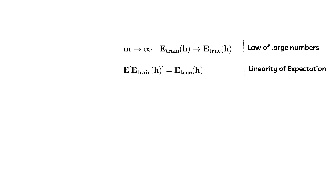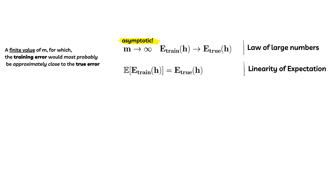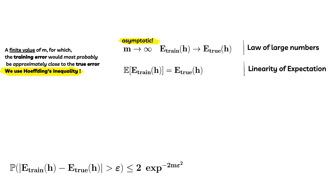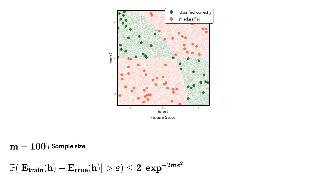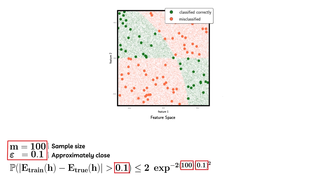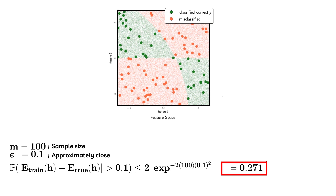It can be shown that the expected value of the training error is the true error. This is an asymptotic result. Knowing this is not very useful. It would be nice if we are able to know a finite value of M for which the training error would most probably be approximately close to the true error. We can do this by using Hoeffding's inequality. Let us say we have a data set of size 100 and we select epsilon at 0.1. Epsilon is how we define being approximately close. Substituting the values of M and epsilon, the answer is 0.271.